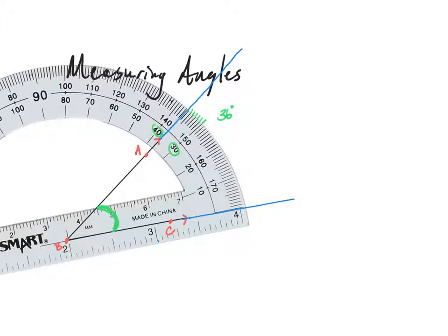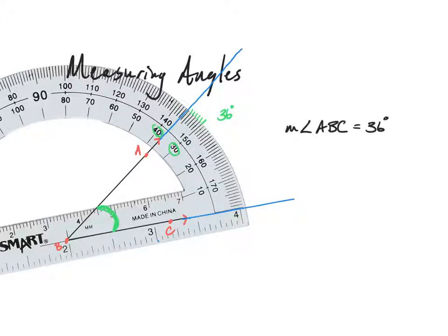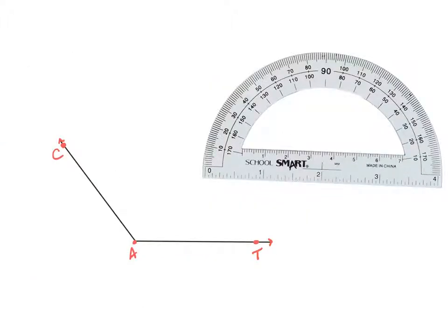A common mistake I see people make is not paying attention to which two numbers your angle is between. In this case it's between 30 and 40. It's easy to see the 40 over here and start counting 41, 42, 43 — because we normally read left to right — but remember these numbers are counting up from the zero degree line, so we're going in between 30 and 40. So the measure of angle ABC equals 36 degrees, which is an acute measure and is reasonable for this angle.